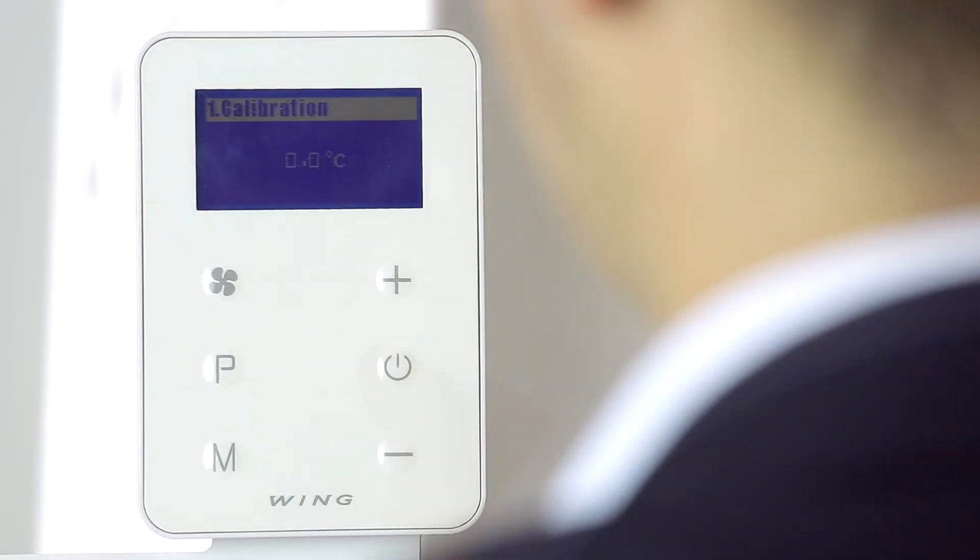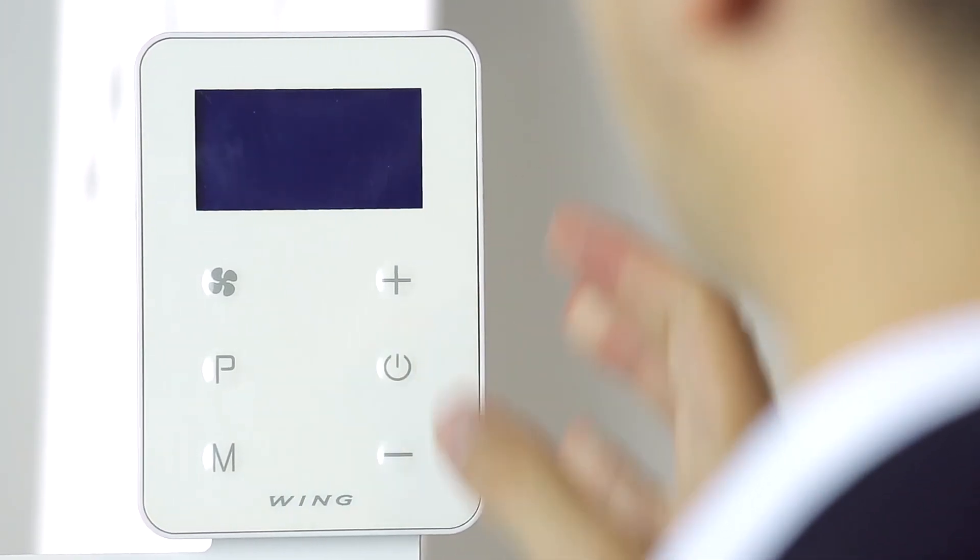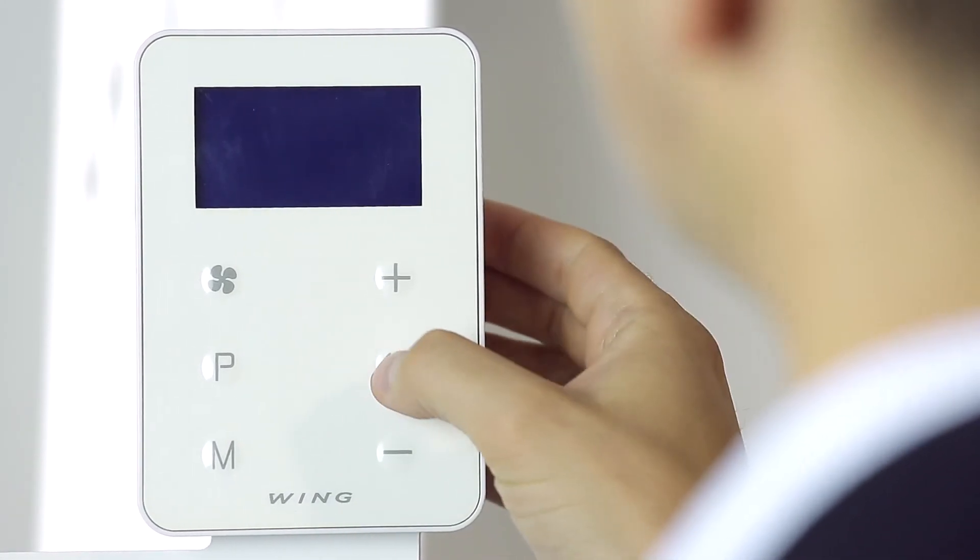To confirm all of our chosen settings, we press the on-off button and restart the controller. Restarting the controller will turn on the main screen with all settings saved.